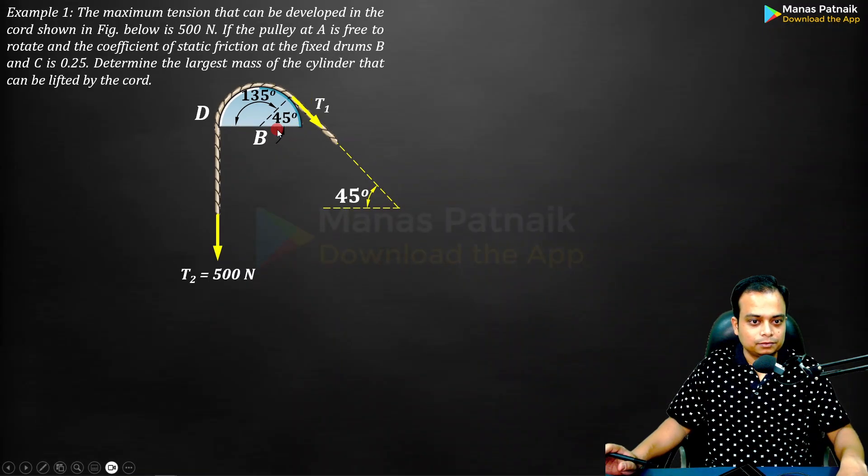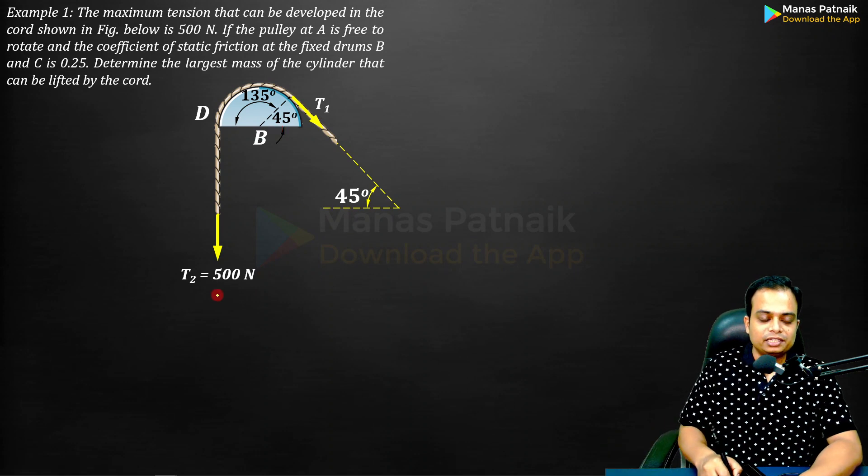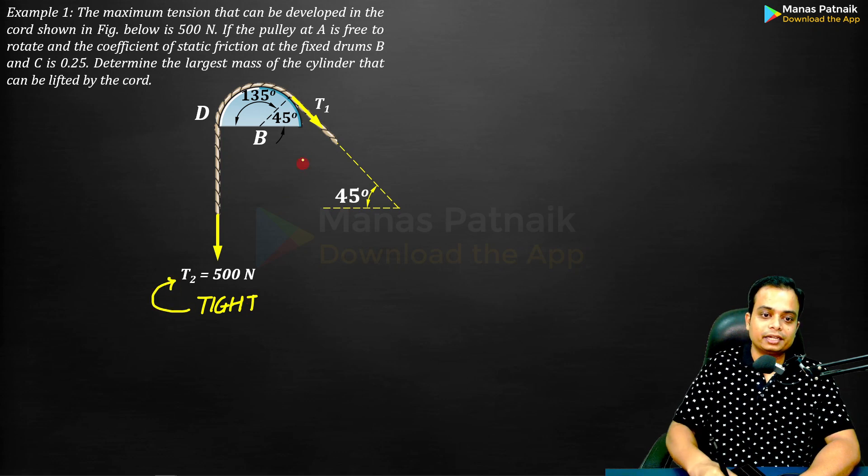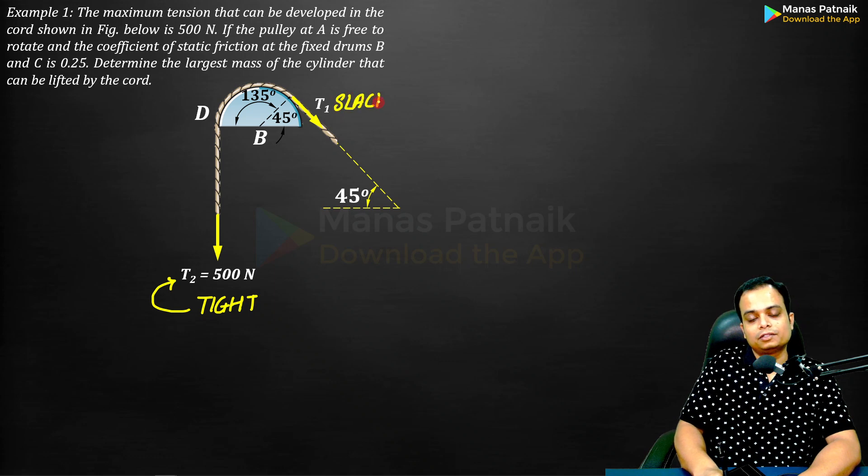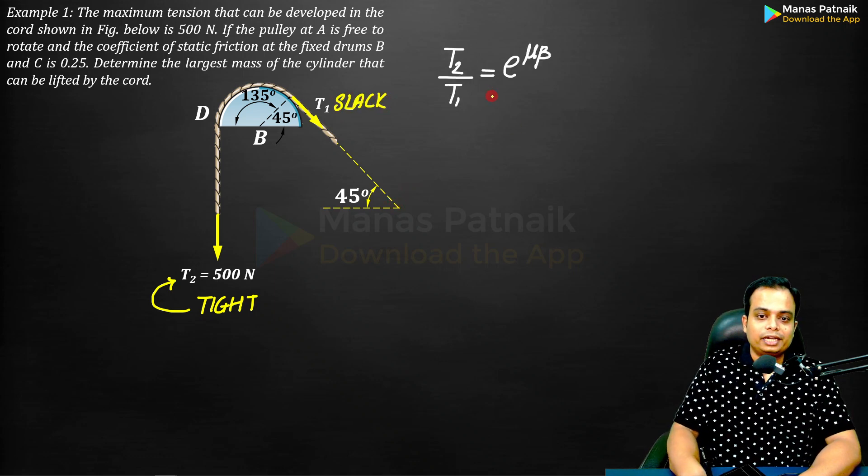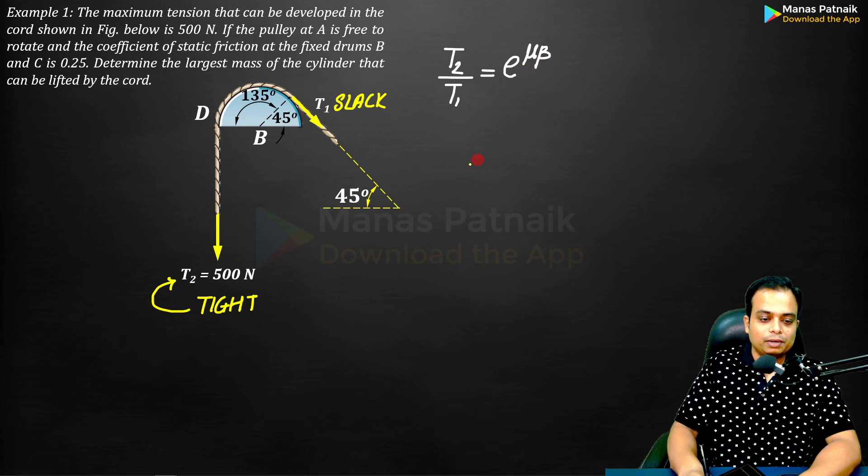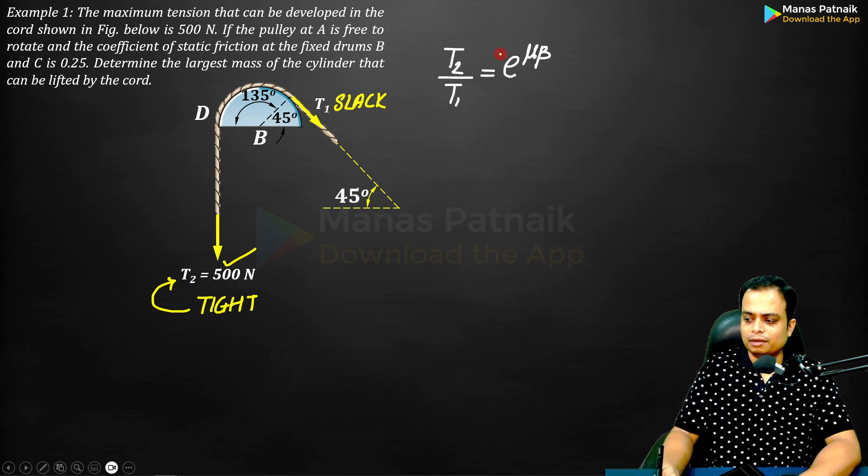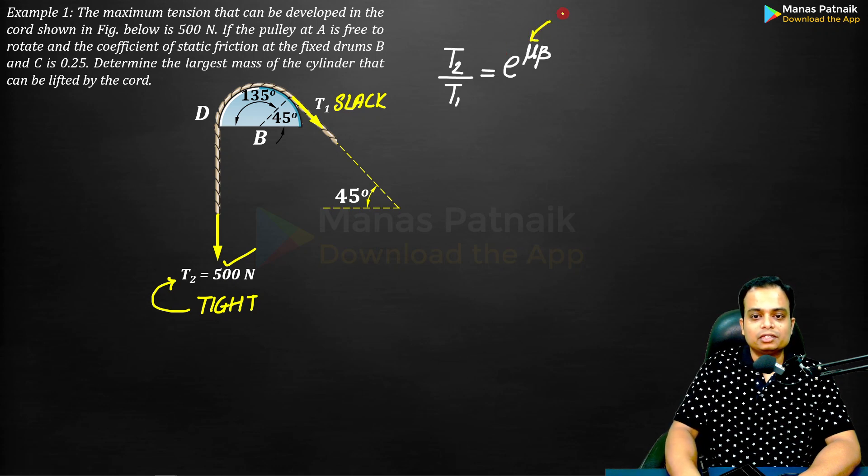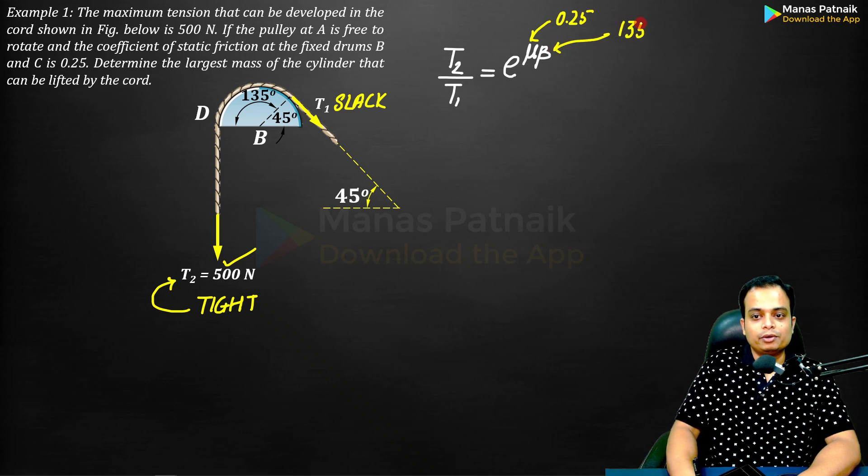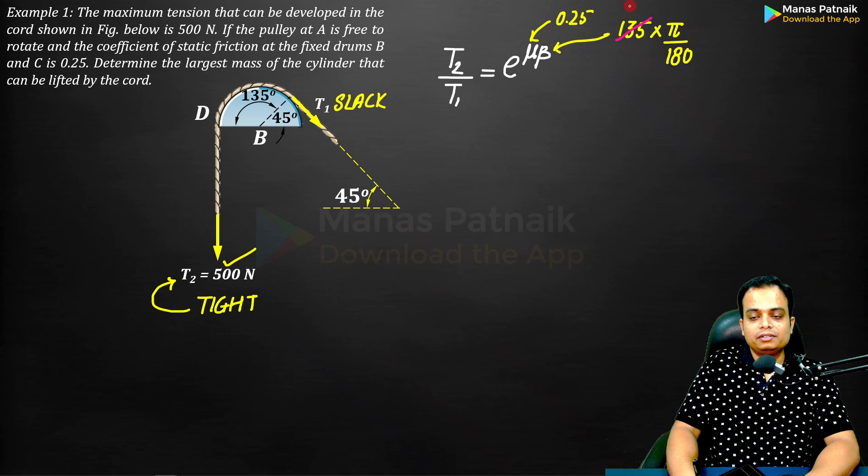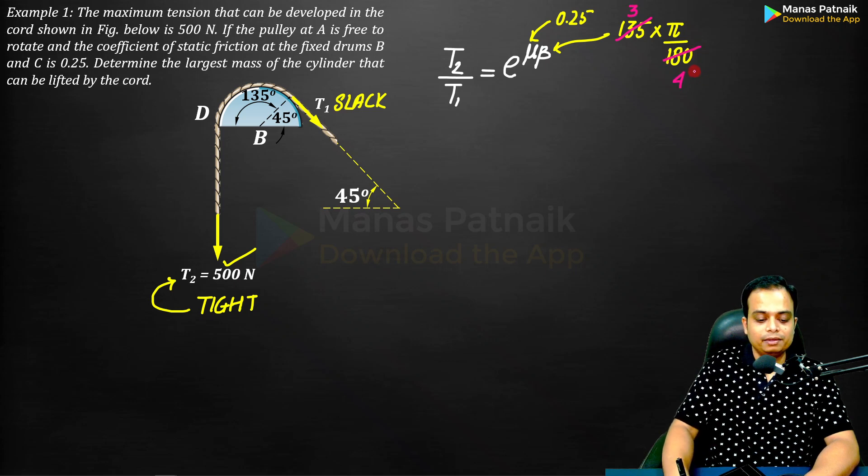Which one is the tighter side? This one is the tighter side. Make sure you mark it as T2 and not T1. This one is the slacker side. So T2 by T1 equals e raised to mu beta. T2 is 500, e is 2.708, mu has been given as 0.25, and beta is 135 degrees, which needs to be converted to radians by multiplying by pi over 180.